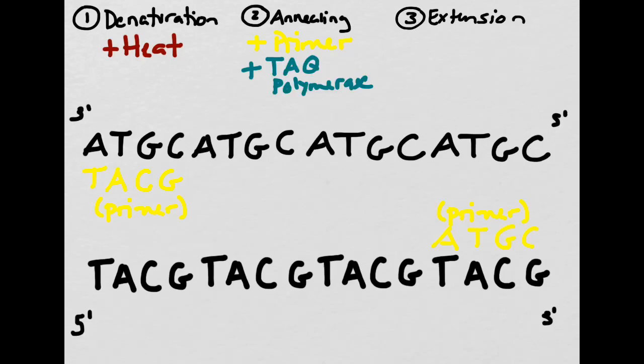In the second step of PCR, which is called annealing, the DNA is cooled enough to allow a primer to attach to the three-prime end of each strand. The primer serves as a marker for something called taq polymerase.